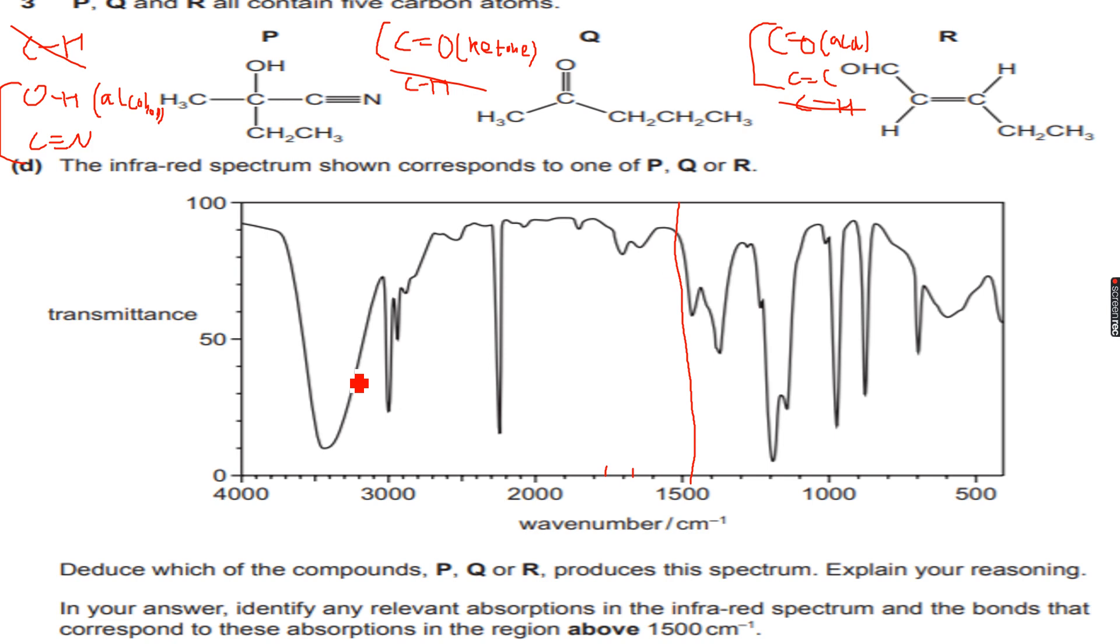So it can neither be Q nor R. Now we know that this is the infrared spectrum of compound P, but we will have to prove this further. We have already proved that it cannot be possible for Q and for R, so it is possible for P.